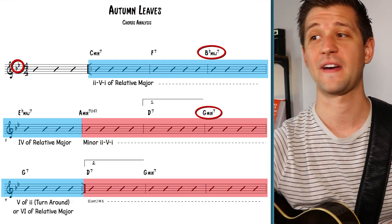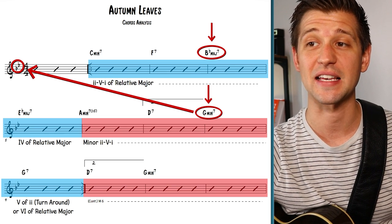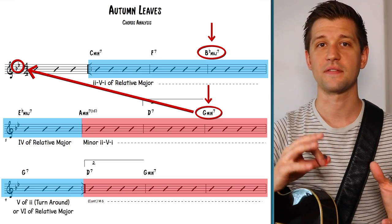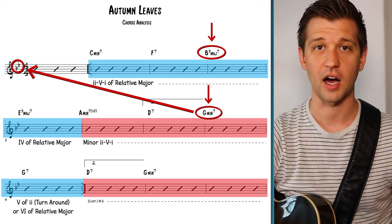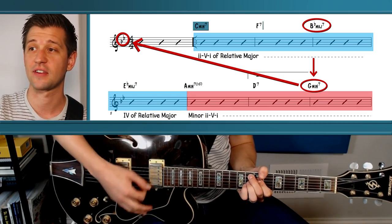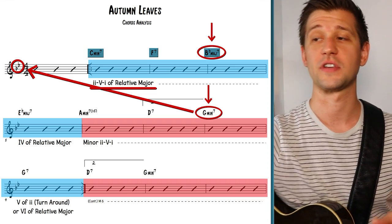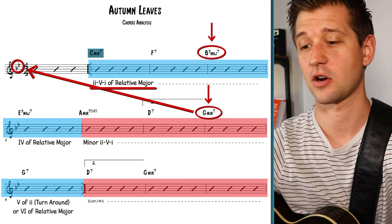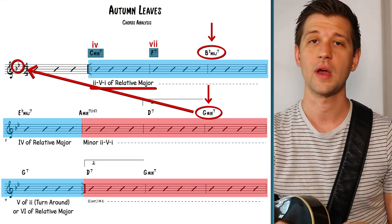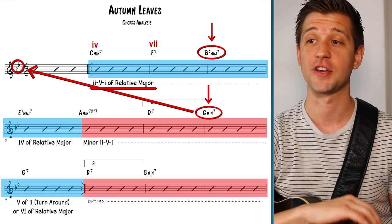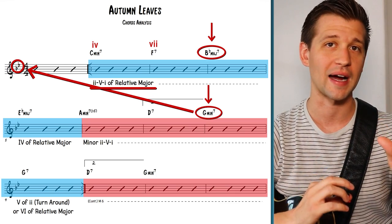We have what's called relative keys: the key of B flat major and the key of G minor share the exact same key signature — two flats, B flat and E flat — meaning they share all the same notes, just arranged differently. The first three bars — C minor seven, F seven, B flat major seven — form a two-five-one in B flat major, but you can also analyze them relative to G minor: C minor is the four chord and F seven is the seven chord of G minor. Recognizing relative keys helps organize the jazz standards you're learning.